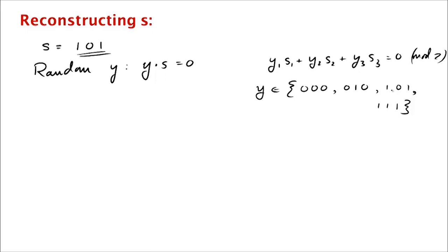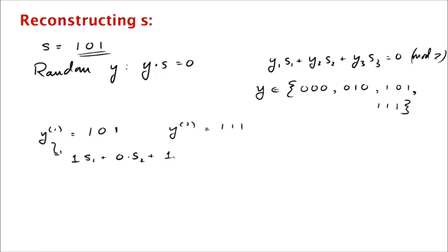Let's pick y at random twice. Say the first sample was 101, and the second sample was 111. Now we have our equations — remember s is now unknown. We write out our first equation: 1·s1 plus 0·s2 plus 1·s3 is 0. We are working modulo 2, of course. And then 1·s1 plus 1·s2 plus 1·s3 equals 0 as well. That's the second equation.